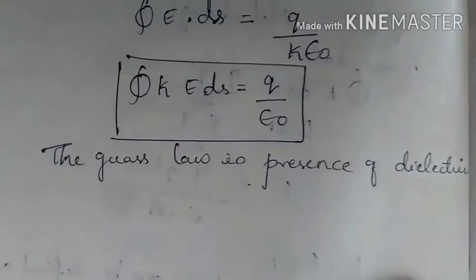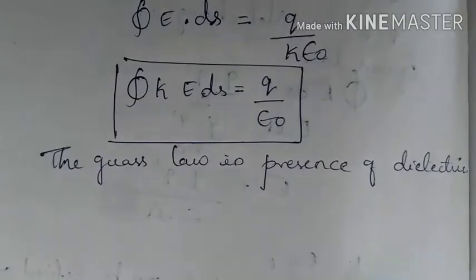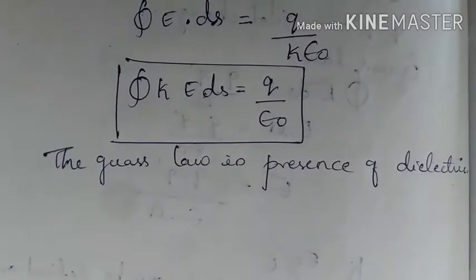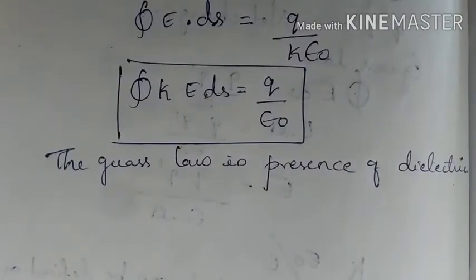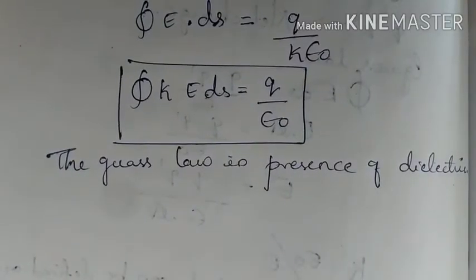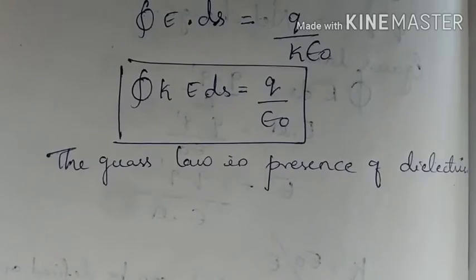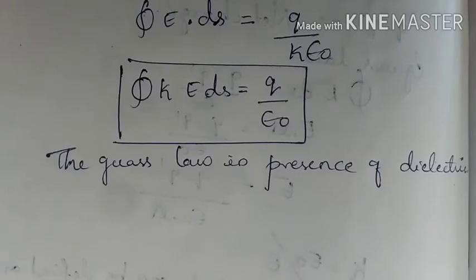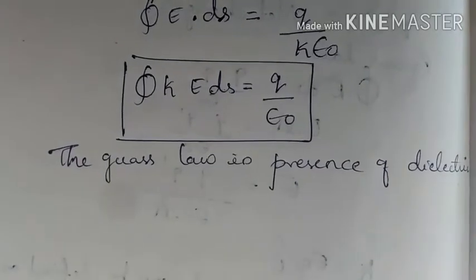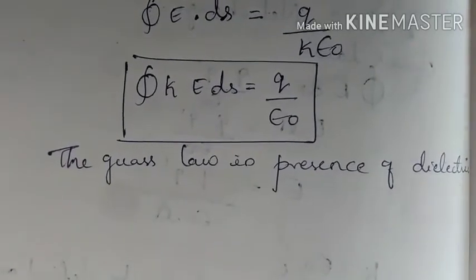In our previous lecture, we learned about Gauss law in dielectrics — that is, the integral over a closed surface of K·dS equals Q divided by epsilon naught. Today in our class, let us try to learn about electric displacement.